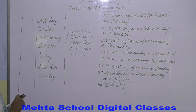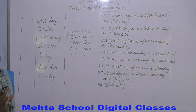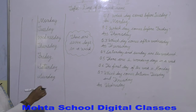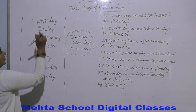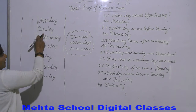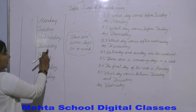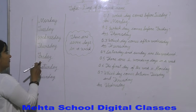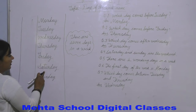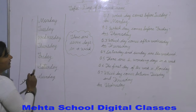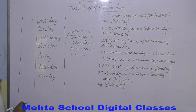There are 7 days in a week. A week means 7 days. Koan koan se dekhe — Monday, Tuesday, Wednesday, Thursday, Friday, Saturday, aur Sunday. So students ab dekhe.